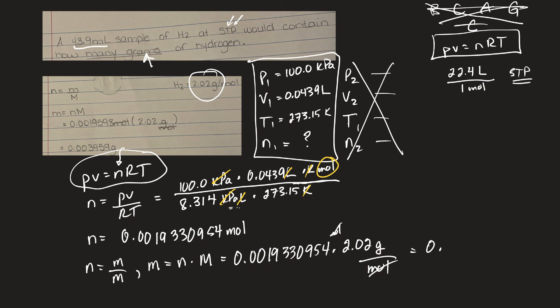Okay, so I'm getting 0.00390485, et cetera, grams of hydrogen. So that little 43.9 mil sample at STP would contain not many grams.